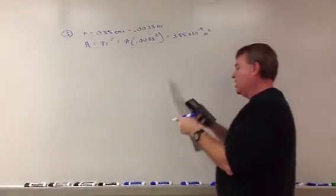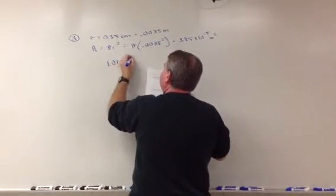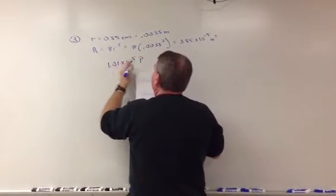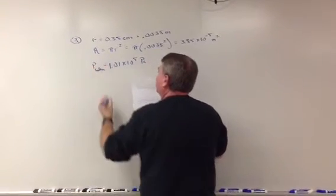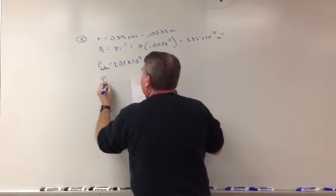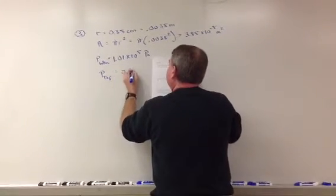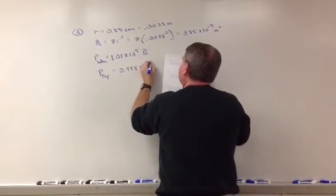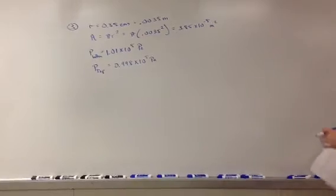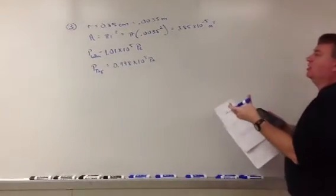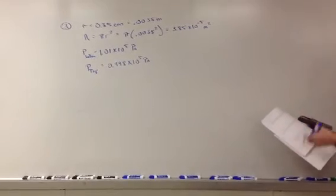The pressure of the atmosphere drops from 1.01 times 10 to the 5th pascals at the bottom. So the pressure at the bottom is equal to this. The pressure at the top is equal to 0.998 times 10 to the 5th pascals. And what's happening here is you have a person who's going from an environment that's at a high pressure to an environment that's at a lower pressure.